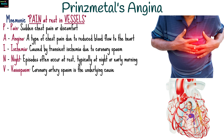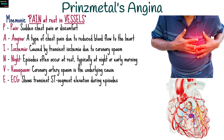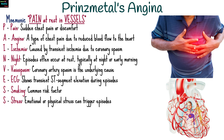V for vasospasm of the coronary artery, which is usually the underlying cause. E for ECG reading that shows transient ST segment elevation during episodes. S for smoking, a common risk factor. S for emotional or physical stress that can trigger episodes.